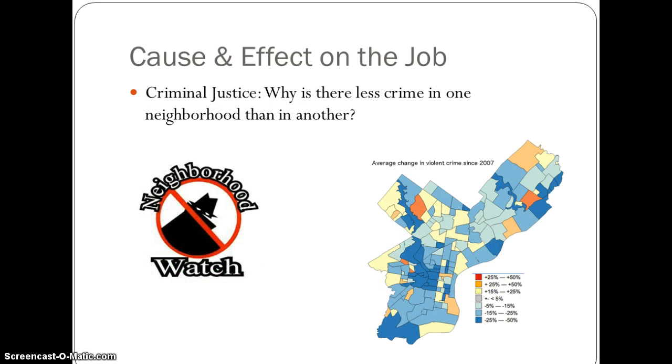In criminal justice, one might want to determine why there is less crime in one neighborhood than in another neighborhood. Some of the causes that might lead to a lower crime rate could be a neighborhood watch or the diversity of the population that lives in that particular neighborhood.